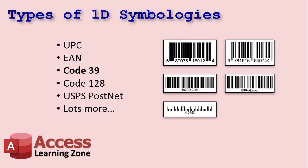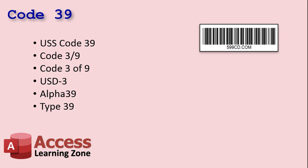Of the 1D barcodes, there are lots of different symbologies — UPC, EAN, all kinds of different stuff. We are going to focus on the Code39 barcode today. It's the easiest one to implement. Now, Code39 has a bunch of different names. It's been around for years — Code 3 of 9. Sounds like a Borg designation, right? But that's all the same barcode.